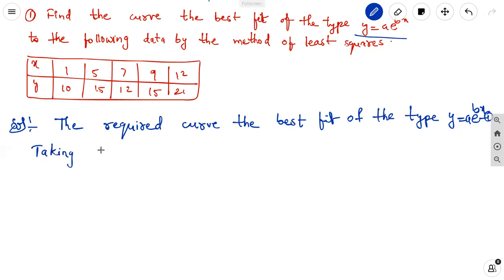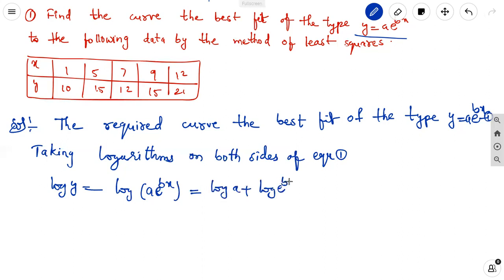Taking logarithms on both sides of equation one. Then log y is equal to log of a e power bx equal to log a plus log e power bx equal to log a plus bx log e. We know that log e is equal to one. So it is ln y is equal to ln a plus bx. It is the second equation.